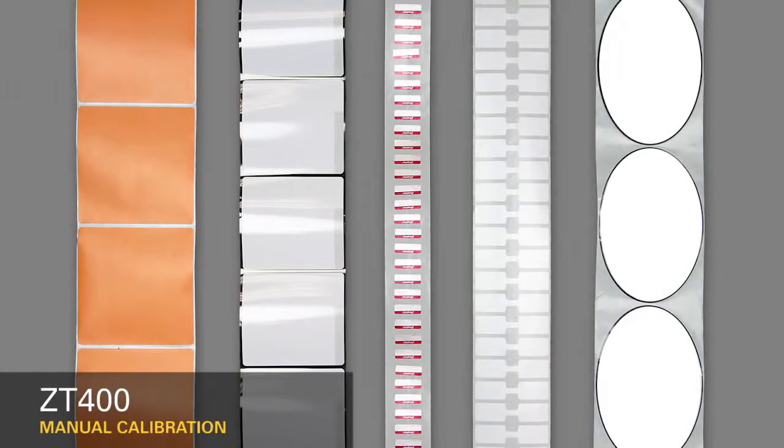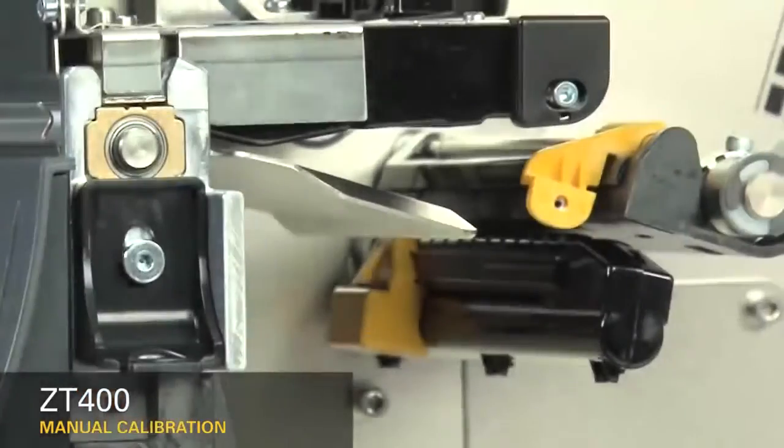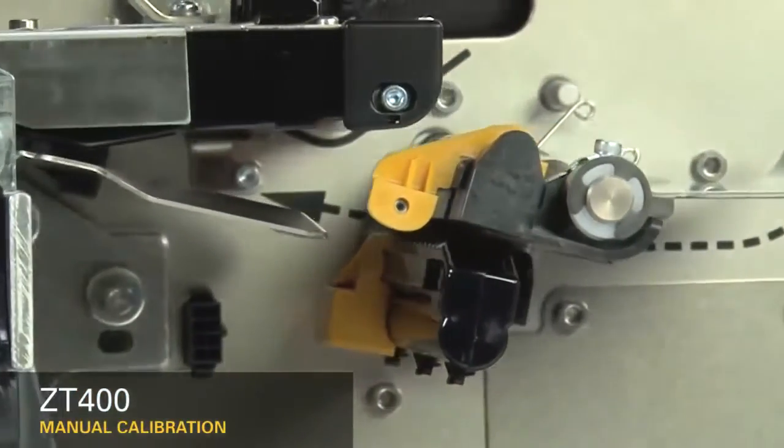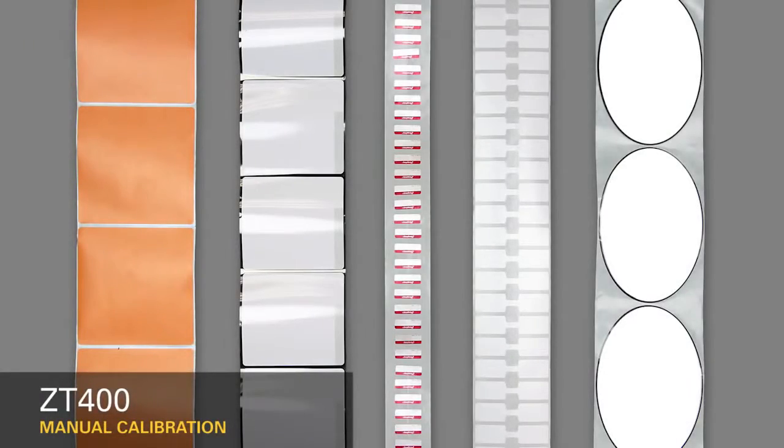In order to place the image in the correct position on the media, you must first identify the features in the media you'd like the printer to detect. Second, you must make sure the sensors in your printer are set up to detect those features. Most media contains features that identify the start position.